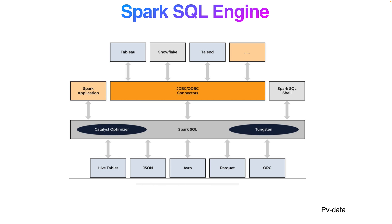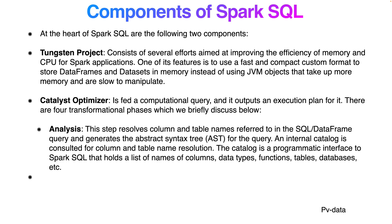At the heart of Spark SQL, the Tungsten project consists of several efforts aimed at improving the efficiency of memory and CPU for Spark applications. One of its key features is the use of a fast, compact, custom format to store data in Datasets in memory, instead of using JVM memory. This is one of the important parts of Tungsten — the JVM object overhead is reduced, allowing users to manipulate data more efficiently.